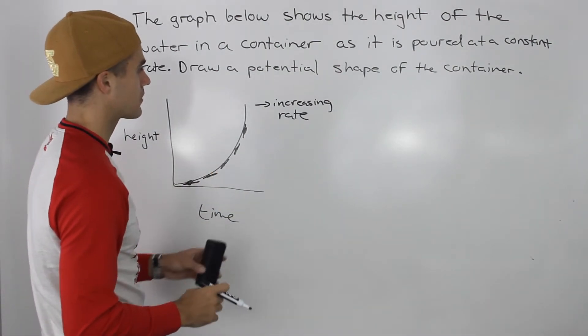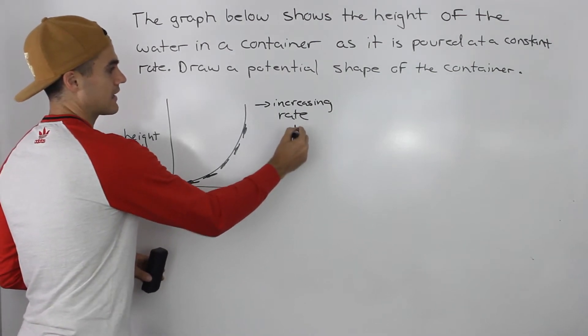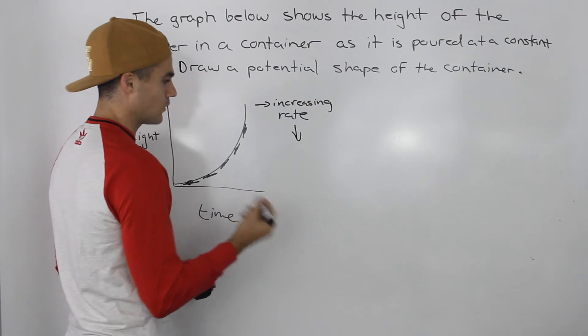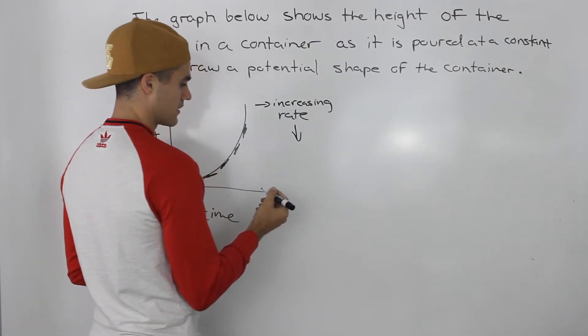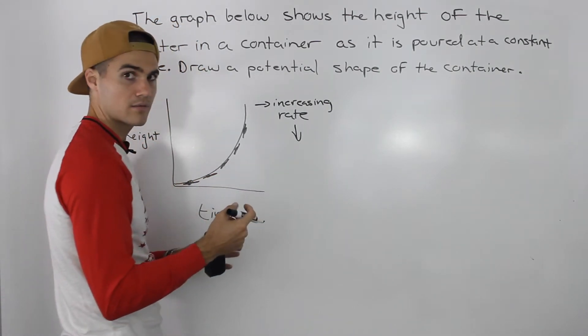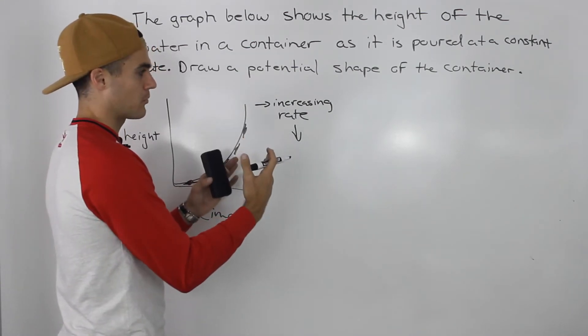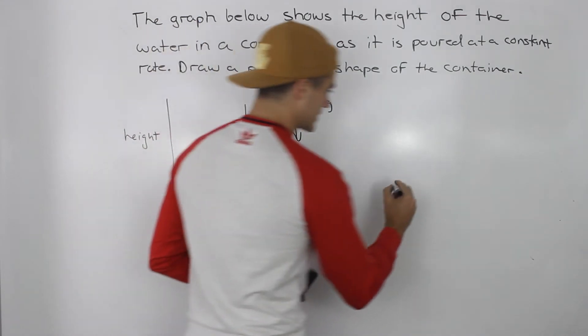So the height is increasing at an increasing rate. It's changing faster and faster. And if you remember, when the height is increasing at an increasing rate, that means that the lower portion of the container is going to have a larger diameter than the upper portion. So the container